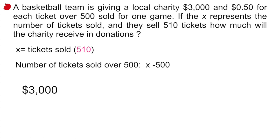So they told us in the question that they sold 510, and we would subtract that by 500 because they specified that they would give 50 cents for all those tickets above 500. They've only actually sold 10 tickets above that 500 threshold. So that's how you would set up your equation.